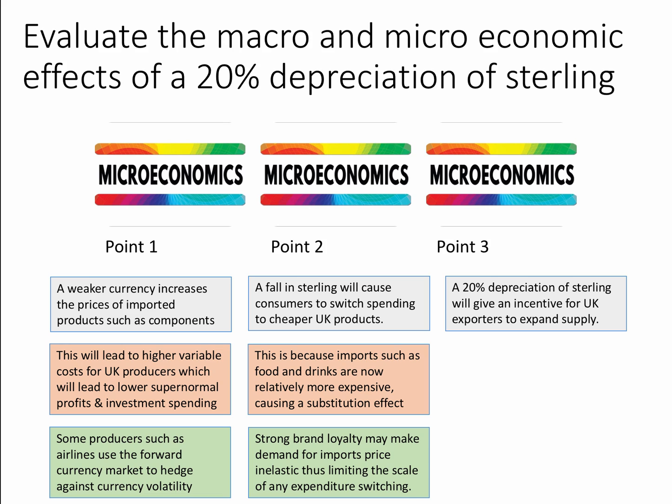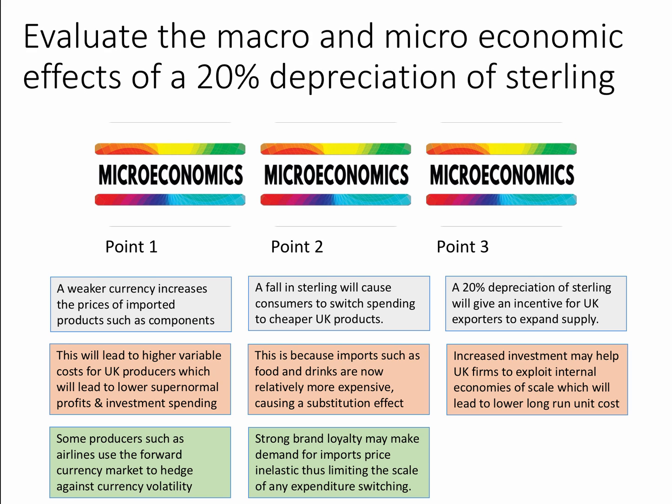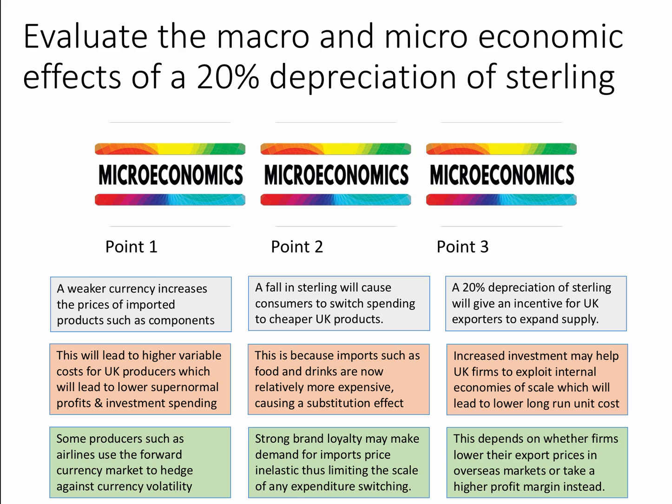The third point: a 20% depreciation of sterling will give an incentive for UK exporters to expand supply — they have the potential to increase their sales in overseas markets. Increased investment may help UK firms exploit internal economies of scale, leading to lower long-run unit costs. However, this depends on whether firms actually lower their export prices in overseas markets. Instead of increasing sales and investment, they may keep output more or less the same but take a higher profit margin, so you wouldn't necessarily get the economies of scale benefits.